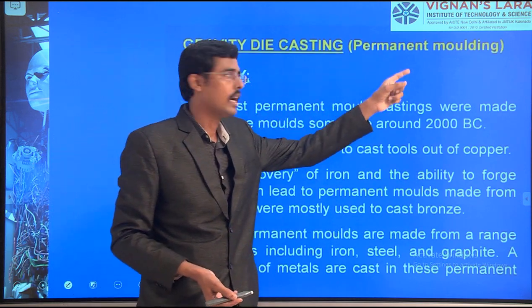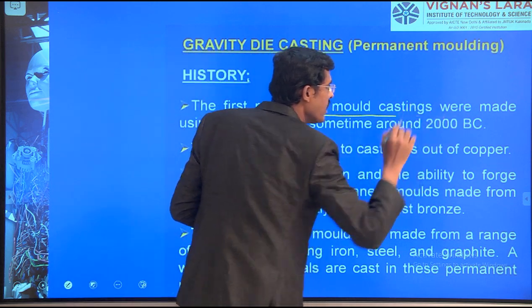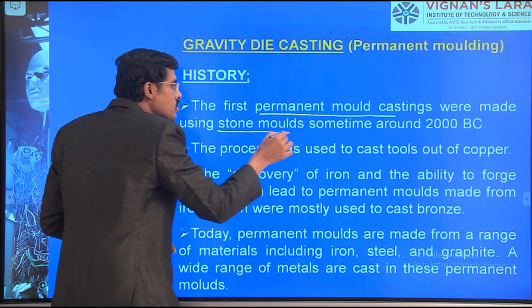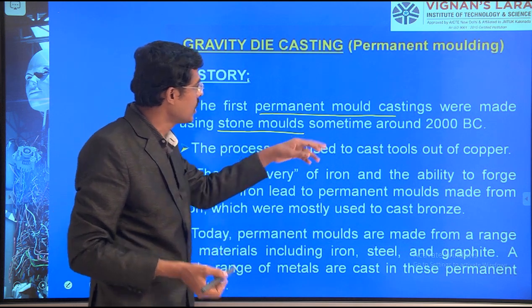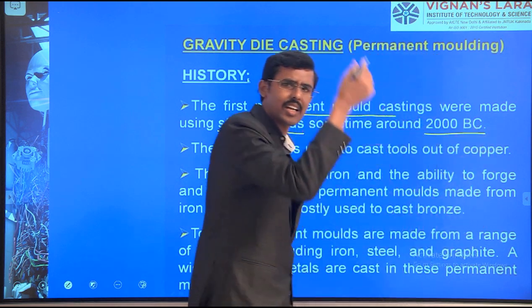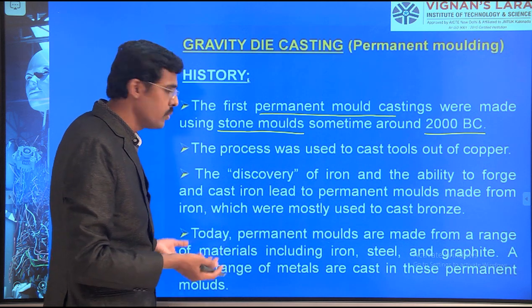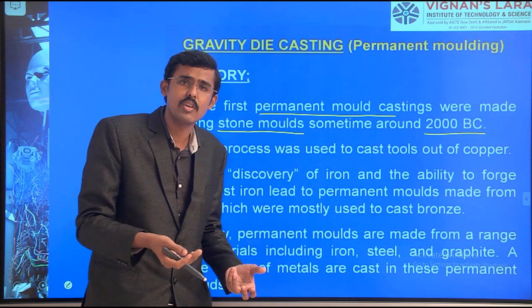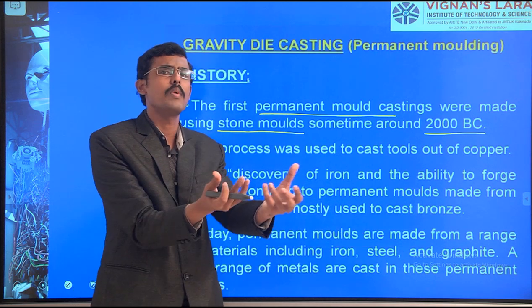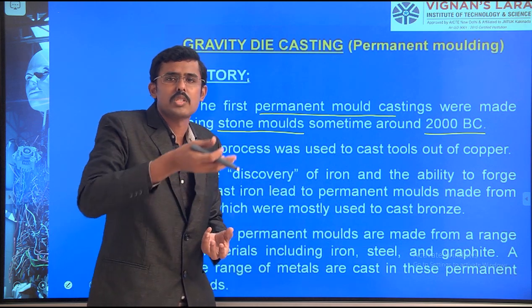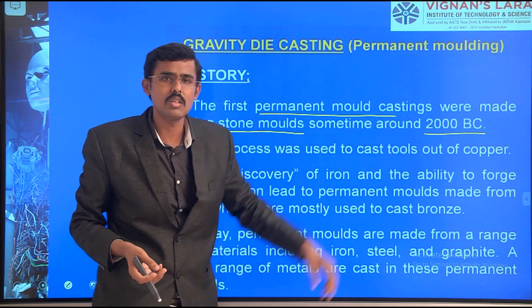Gravity die casting is the permanent molding process. The first permanent mold castings were made using stone molds, around 2000 BC. Initially they started with low melting point materials — zinc, lead, tin — then later moved to alloy systems with high melting points such as copper, steel, and titanium. The advancement took place from 2000 BC onwards.